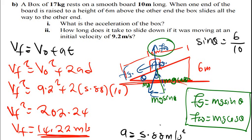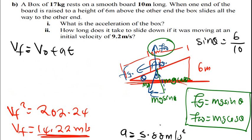After finding the final velocity, I'm going to use this formula to find the time. I use now this formula to find the time. The final velocity is 14.22. The initial velocity is 9.2, plus, acceleration, 5.88, times t.